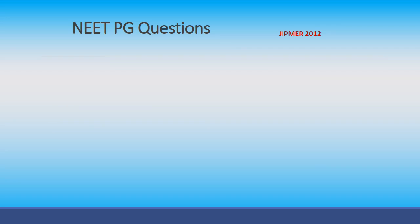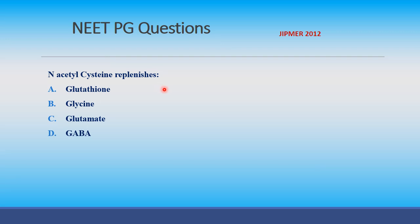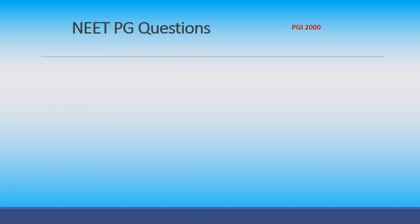PG question (JIPMER 2012): N-acetylcysteine replenishes which of the following? Options: glutathione, glycine, glutamate, GABA. The answer is glutathione.